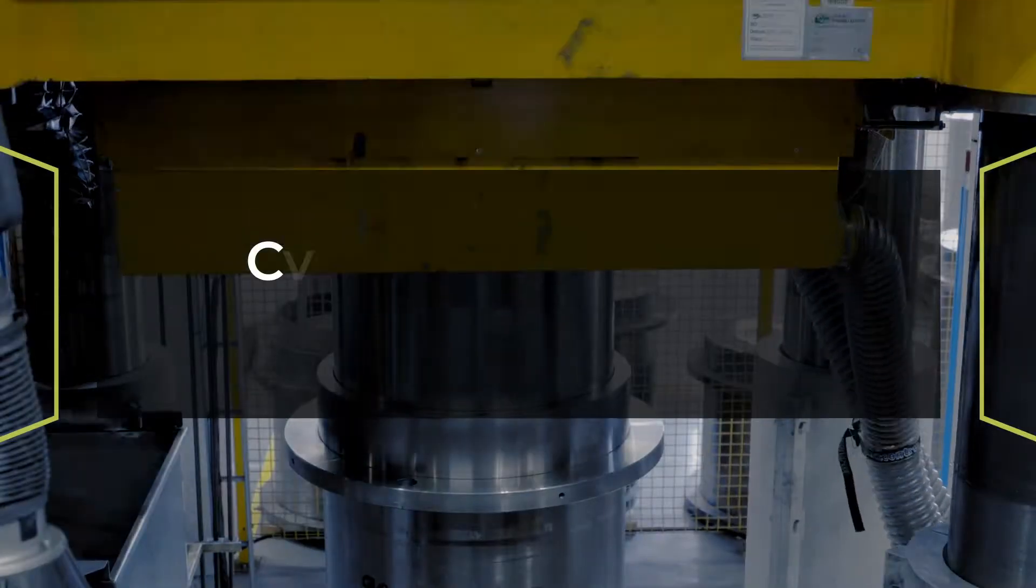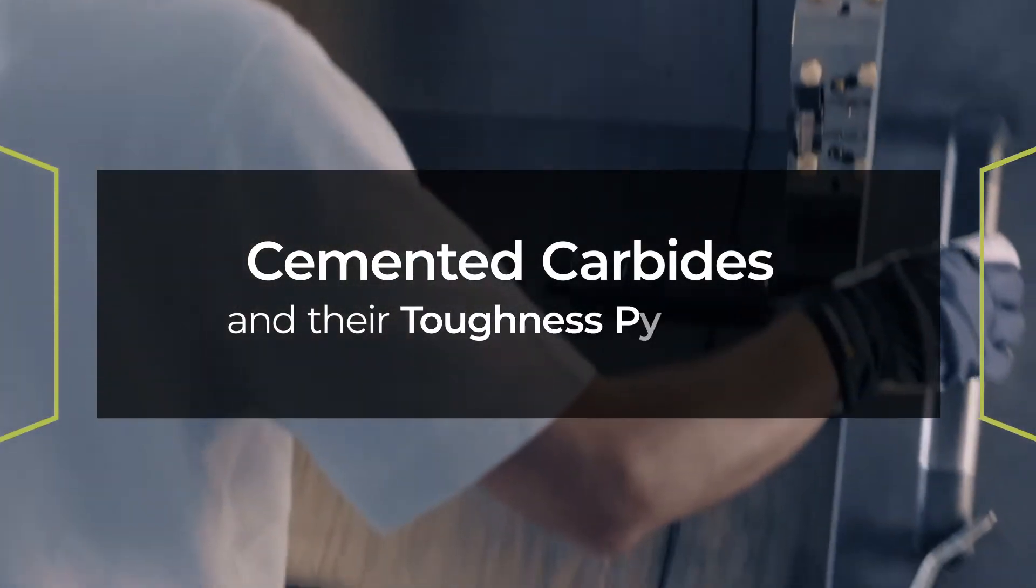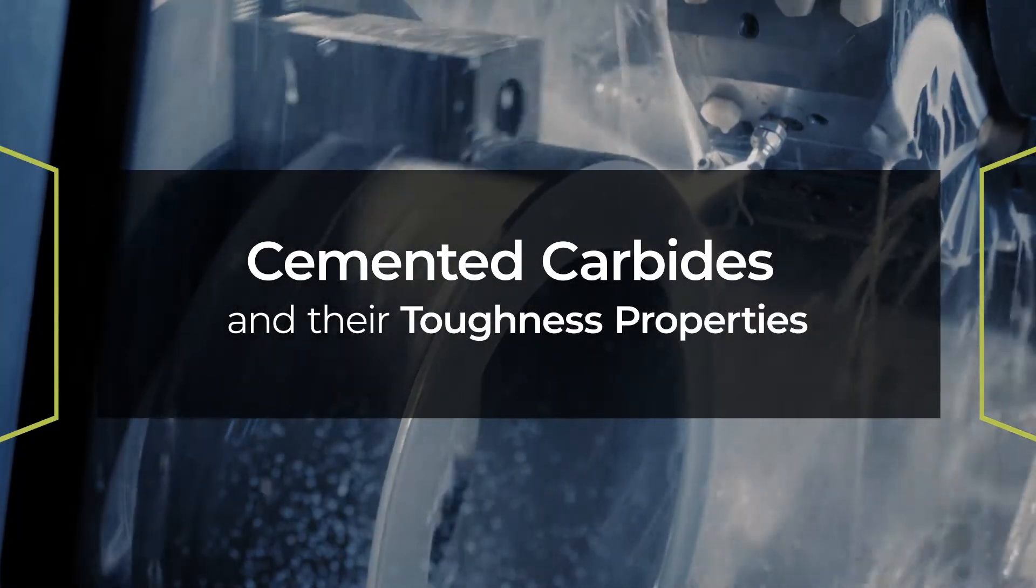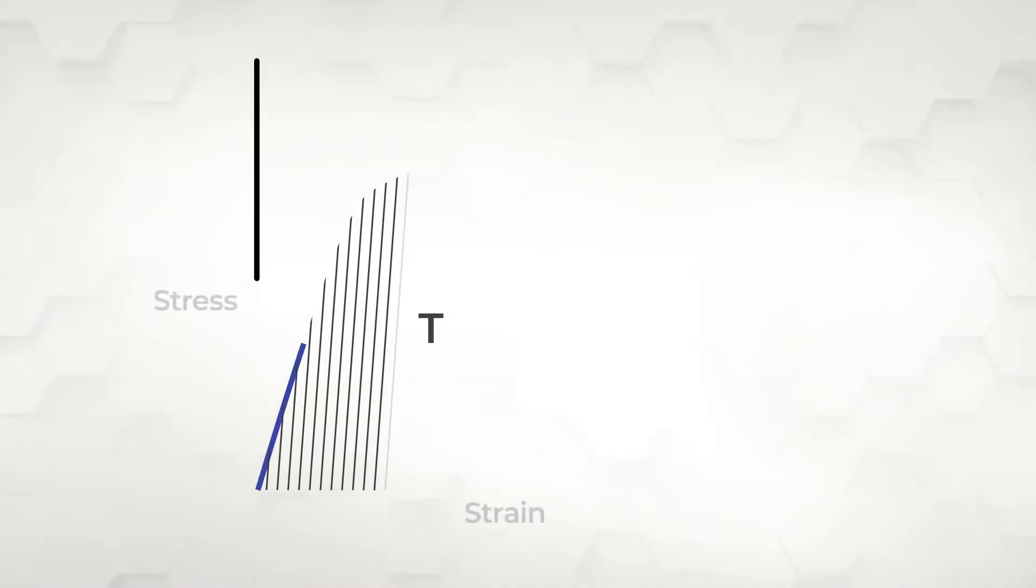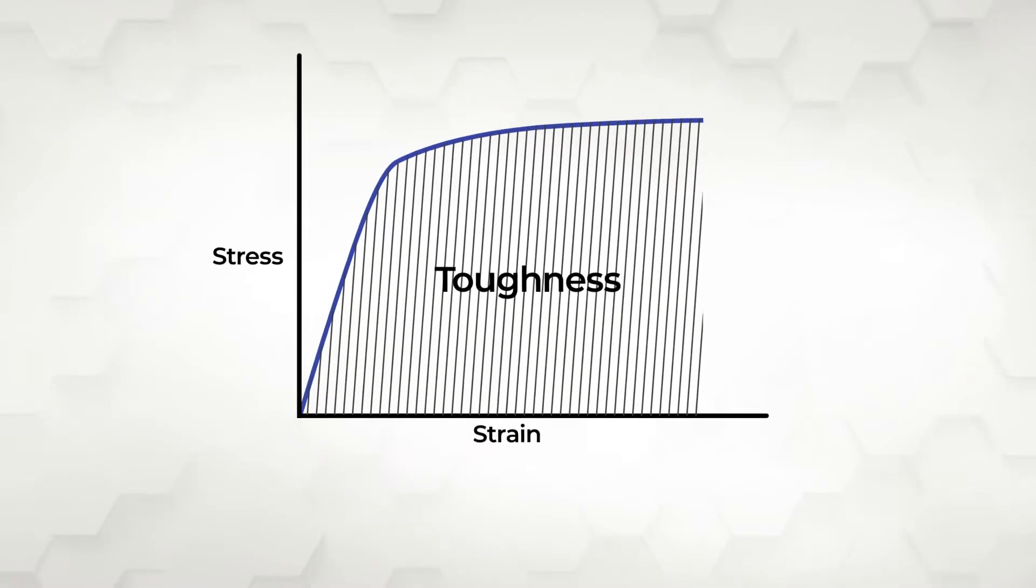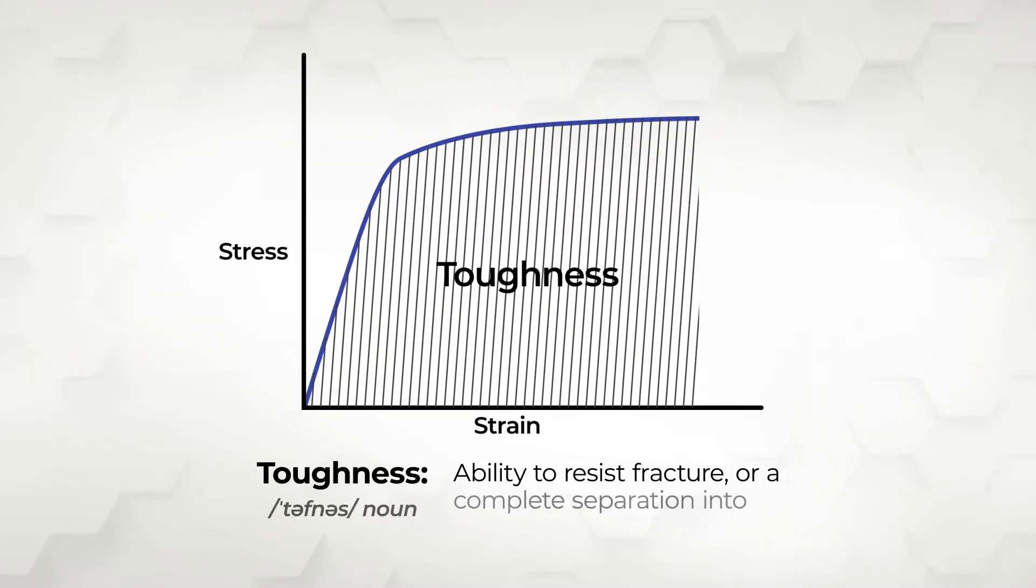In this video, we'll define the property of material toughness and how cemented carbide measures up in terms of toughness. The toughness of cemented carbide can be defined as the ability to resist fracture or a complete separation into at least two parts.